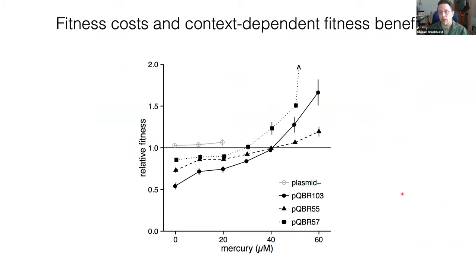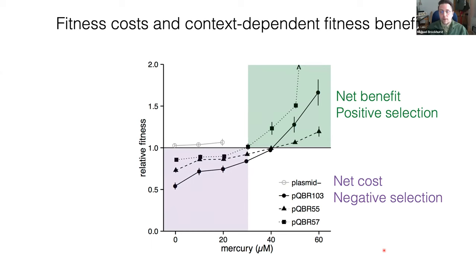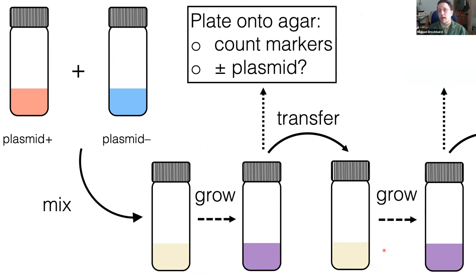We can measure the fitness cost of these plasmids. In the absence of mercury we see quite large — but variable among plasmids — fitness costs. As you increase mercuric ions in the medium, you can recover the fitness cost of plasmid carriage. In this region of parameter space we see a benefit of plasmid carriage and expect positive selection, whereas elsewhere there's a cost and we expect negative selection.